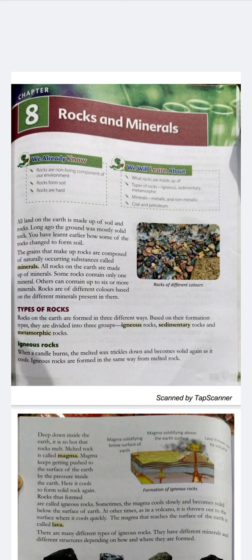Rocks on the earth are formed in three different ways. Based on the formation types, they are divided into three groups: igneous rocks, sedimentary rocks, and metamorphic rocks.